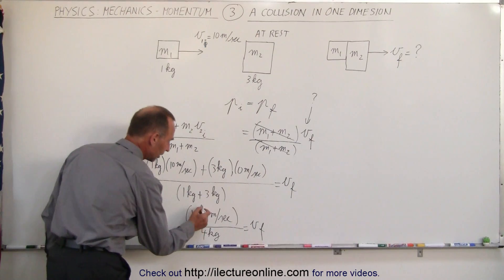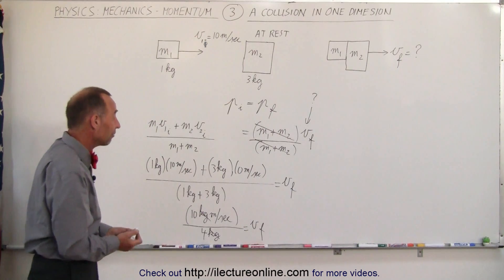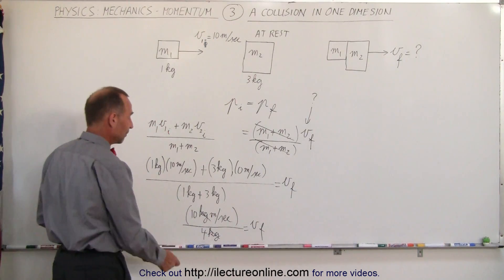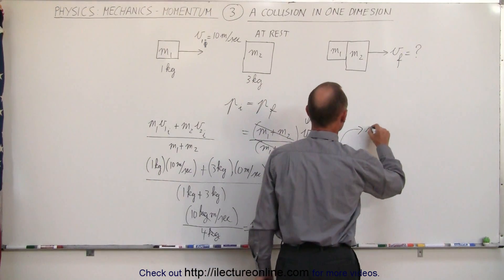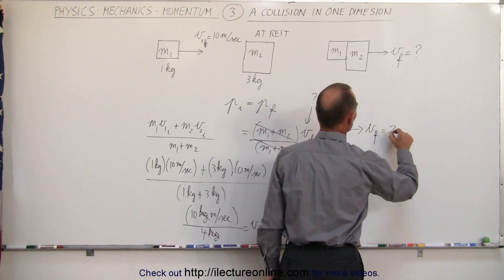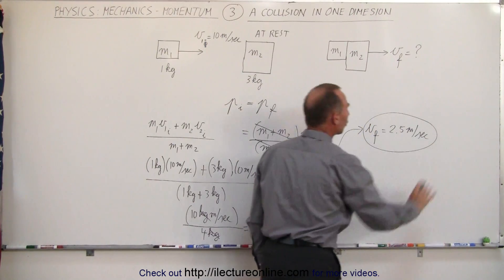Now notice that the kilograms will cancel out, and you're left with meters per second, and that's of course what we want to have because we're finding the final velocity. Well 10 divided by 4, we can then say that the final velocity is equal to 2.5 meters per second. It's positive, therefore to the right.